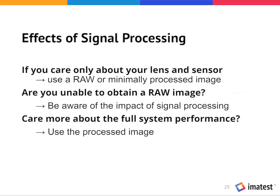As far as signal processing: if you care only about your lens and sensor, ideally try to bypass signal processing and use raw or minimally processed images. If you're unable to obtain the raw image, be aware of signal processing impacts and use methods less affected by it. If you care more about full system performance, go ahead and use the processed image with slanted edge MTF — that will give a good description of how sharp the image actually appears to a viewer.